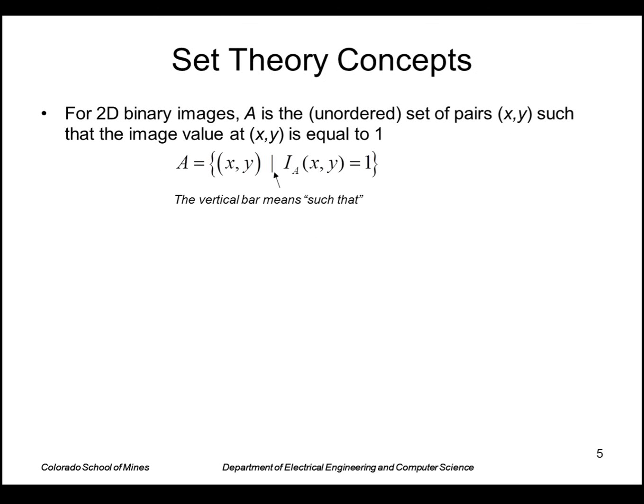So first let's look at some set theory concepts. We're going to treat our 2D binary images as a set of points, XY points that make up the set. And we're going to look at only those points where the image value equals 1. So the set A is not really an image, it's a collection of points. The notation we use is this set notation which says A is the set, that's the curly brackets, of these elements. Vertical bar means 'such that,' and then I(x,y) equals 1.